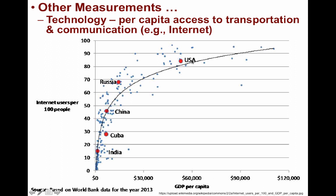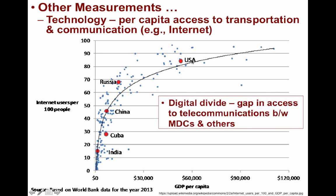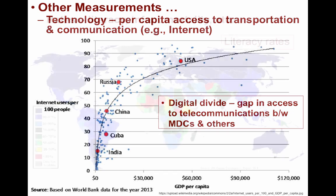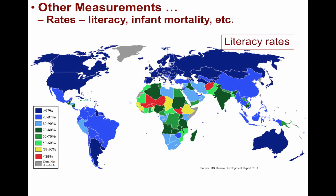This graph also displays the digital divide — the gap in access to telecommunications between more developed countries and less affluent ones. It's a double-edged sword: richer countries have better infrastructure, giving people better access to technology, which in turn enables them to remain wealthy and educated. There are also scores of other rates, such as literacy rates, infant mortality rates, caloric intake, or percentage living on $2 or less a day. This map showing literacy rates pairs very closely with our other measures of development.